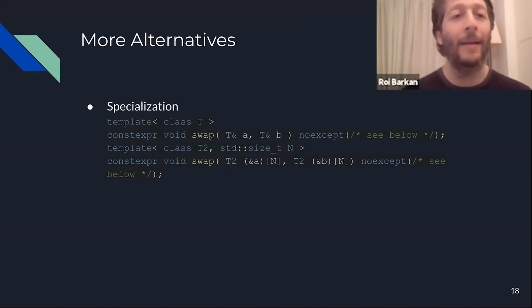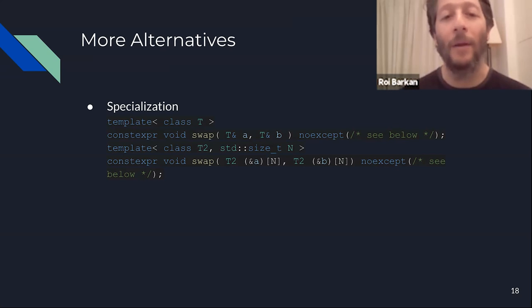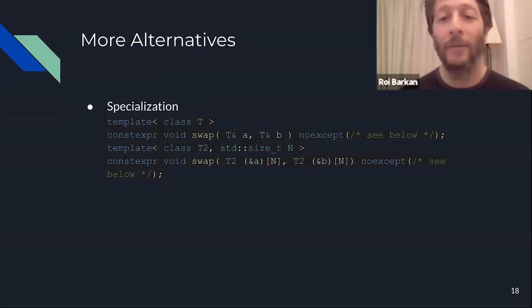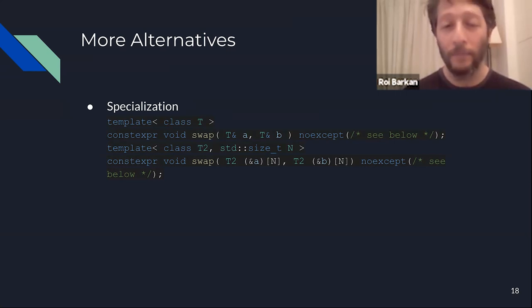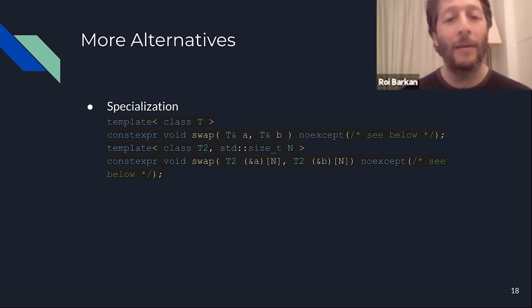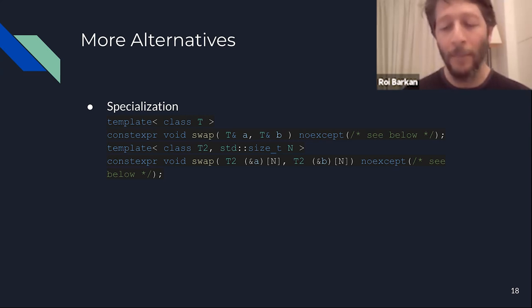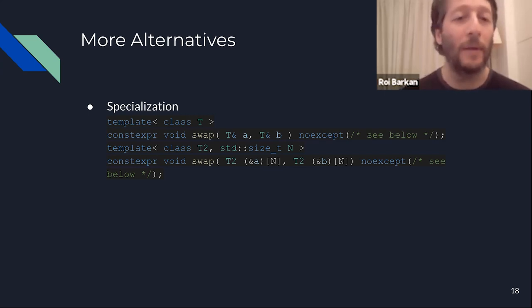One common alternative to concepts is specialization — we saw this example earlier. We can have two different functions with different template arguments, and the compiler knows to choose the most specialized alternative in case of potential collisions. As mentioned, this is not possible for concepts, but for concepts we do something else.